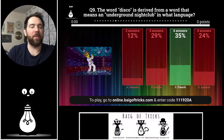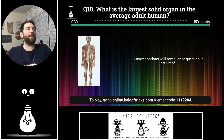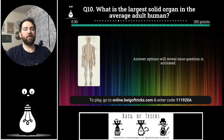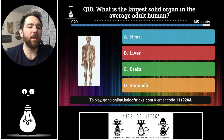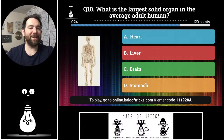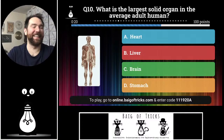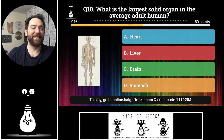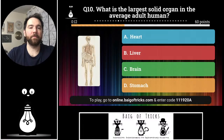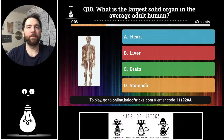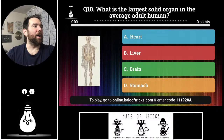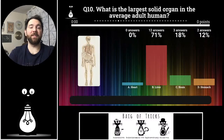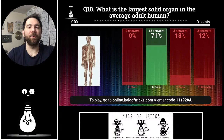Question number ten: what is the largest solid organ in the average adult human? Is it the heart, the liver, the brain, or the stomach? Three people said the brain, two people said the stomach, twelve people said the liver — and that is the correct answer. The liver is, on average, the largest solid organ in the average adult human. Great job.